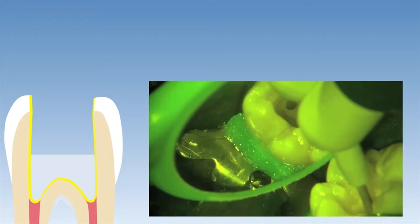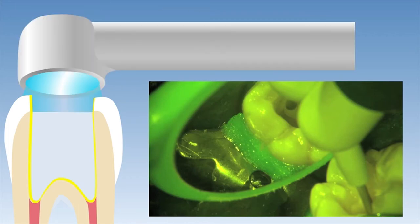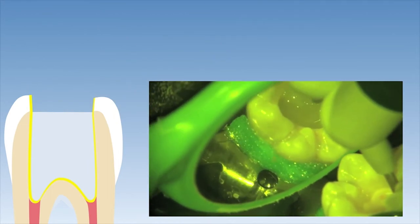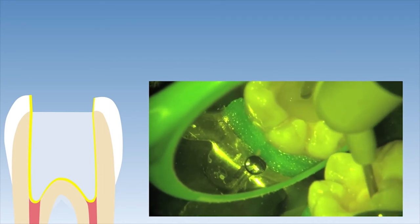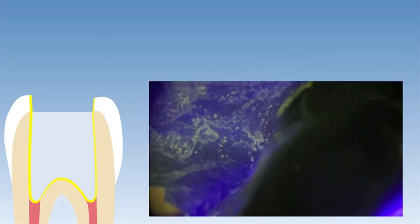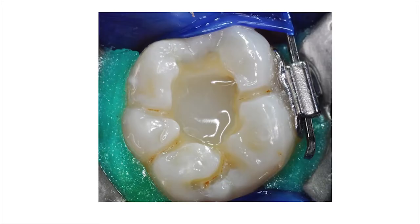This is followed by a 4 mm increment of SDR flowable bulk fill resin material, dispensed and left undisturbed to self-level before it is light cured for 20 seconds. About 85% of the pulp chamber was filled with SDR flowable bulk fill resin material, leaving approximately 2 mm of space to cap it with a conventional composite resin material for a more aesthetic result.